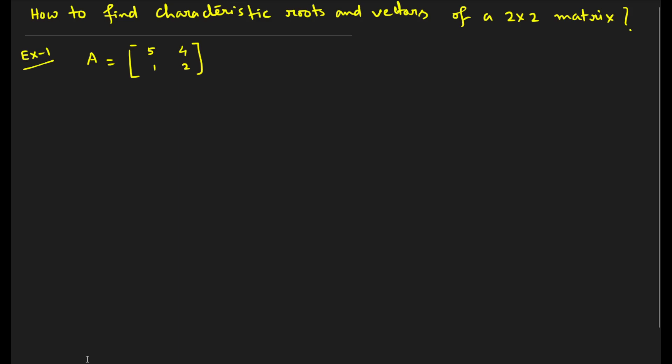Hello everyone and welcome back to yet another lecture on matrices. In our previous lecture we learned what characteristic matrix, characteristic polynomial, characteristic roots, and characteristic vectors are. In this particular lecture we are going to find the characteristic root or eigenvalue together with the characteristic vector or eigenvector of a 2 by 2 matrix, and then also find the characteristic roots and characteristic vectors.